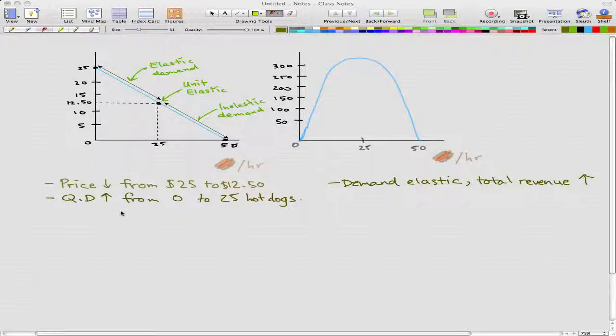When we find that our elasticity was 4 and it's greater than the unit elasticity, which is greater than 1, that means that our demand is elastic. From this information, we know that our demand is elastic and that total revenue increases.